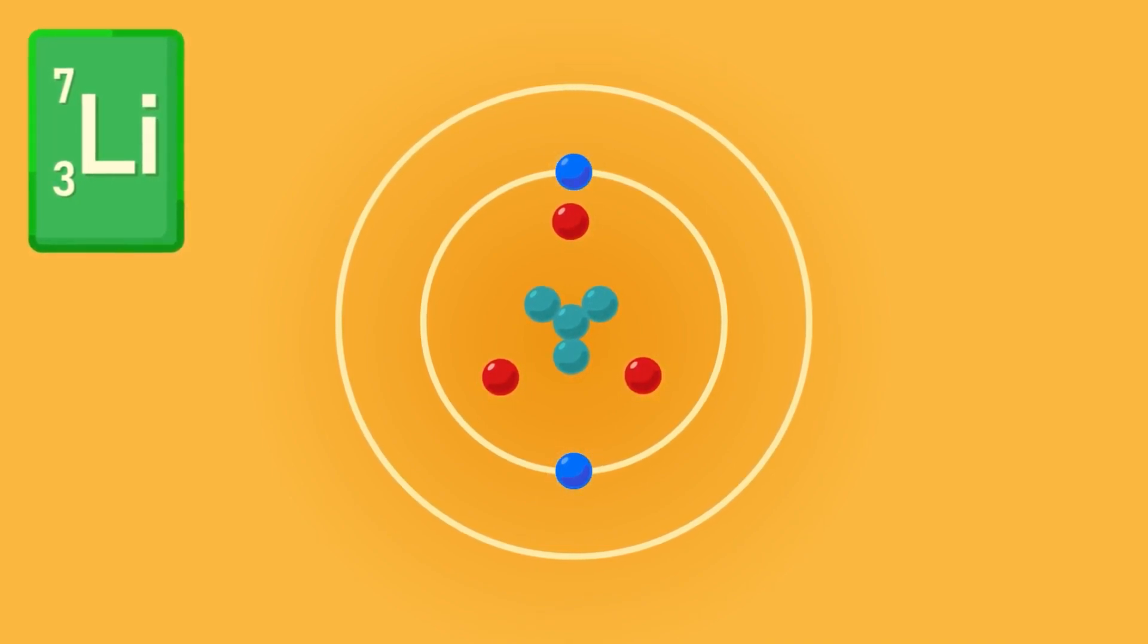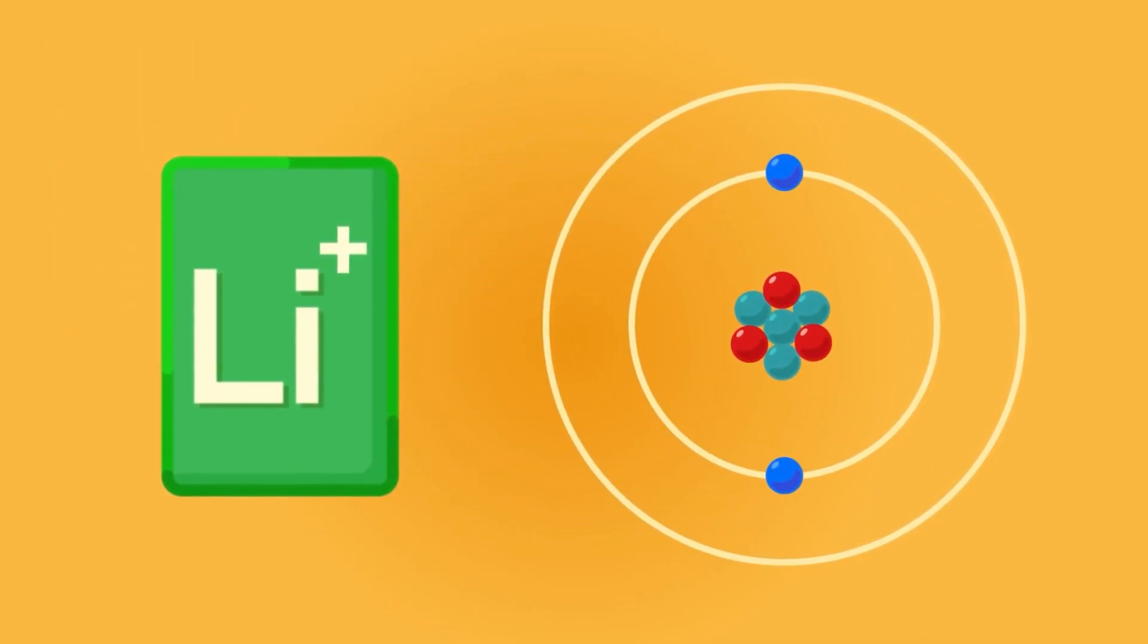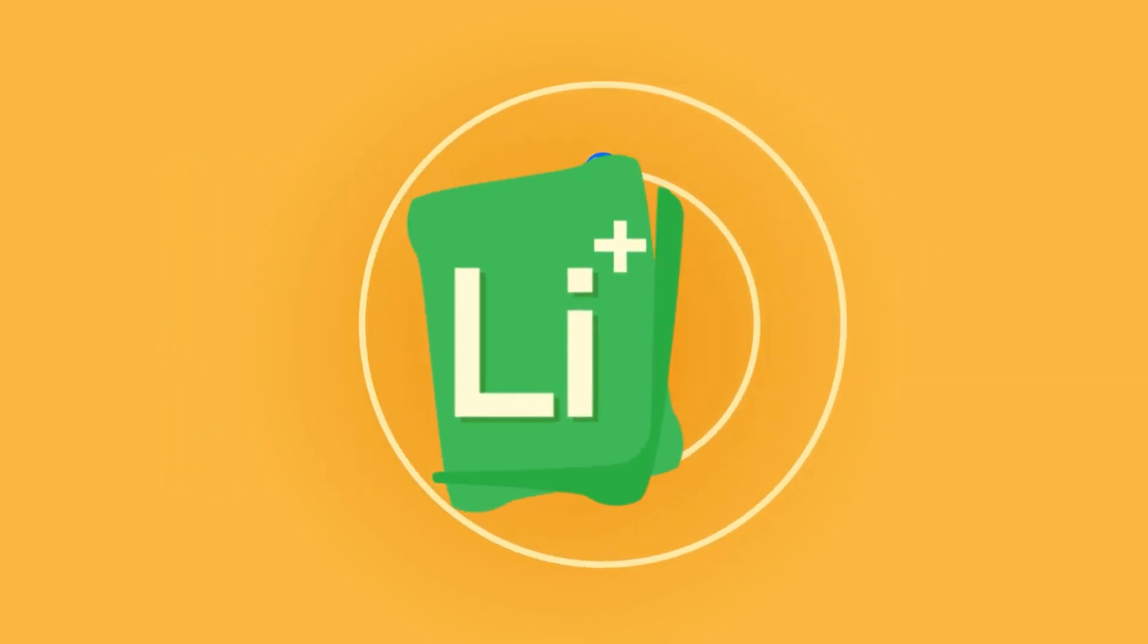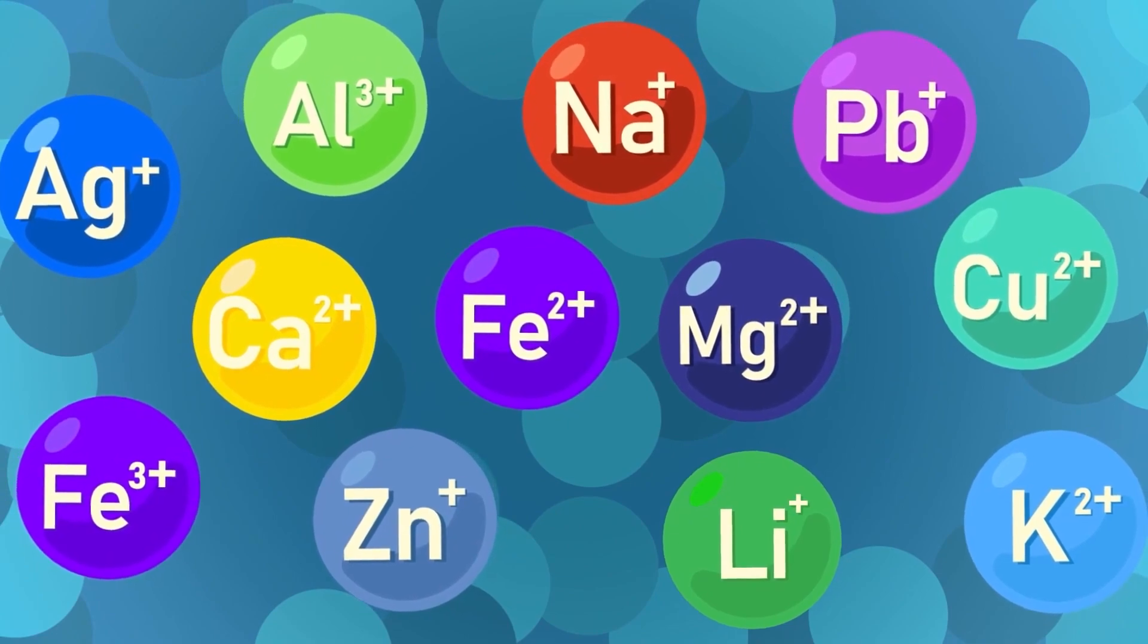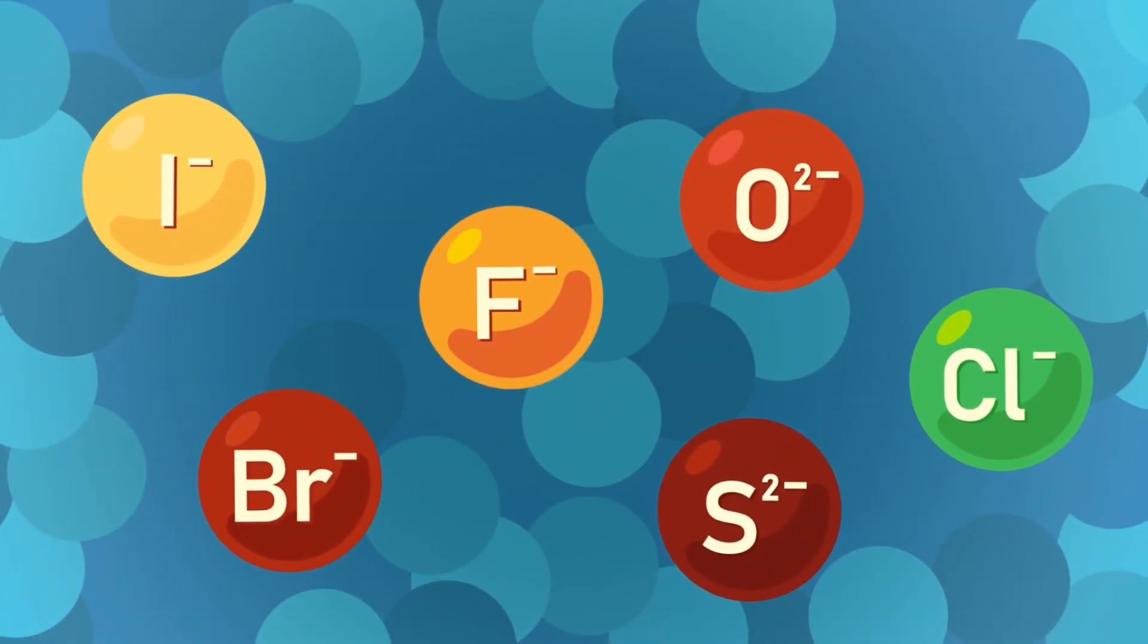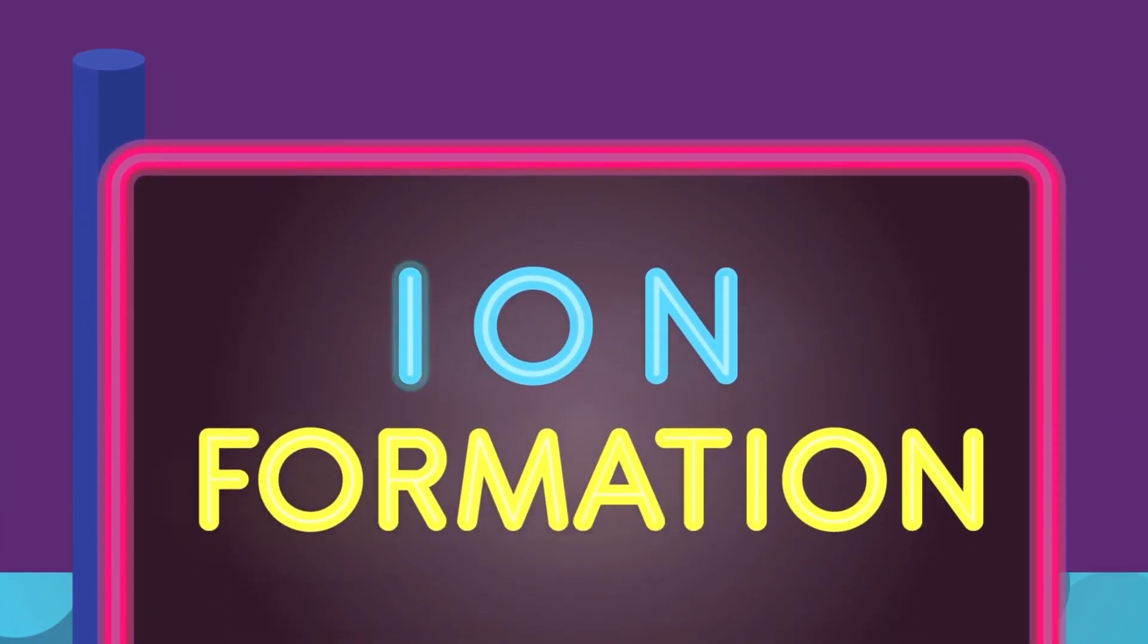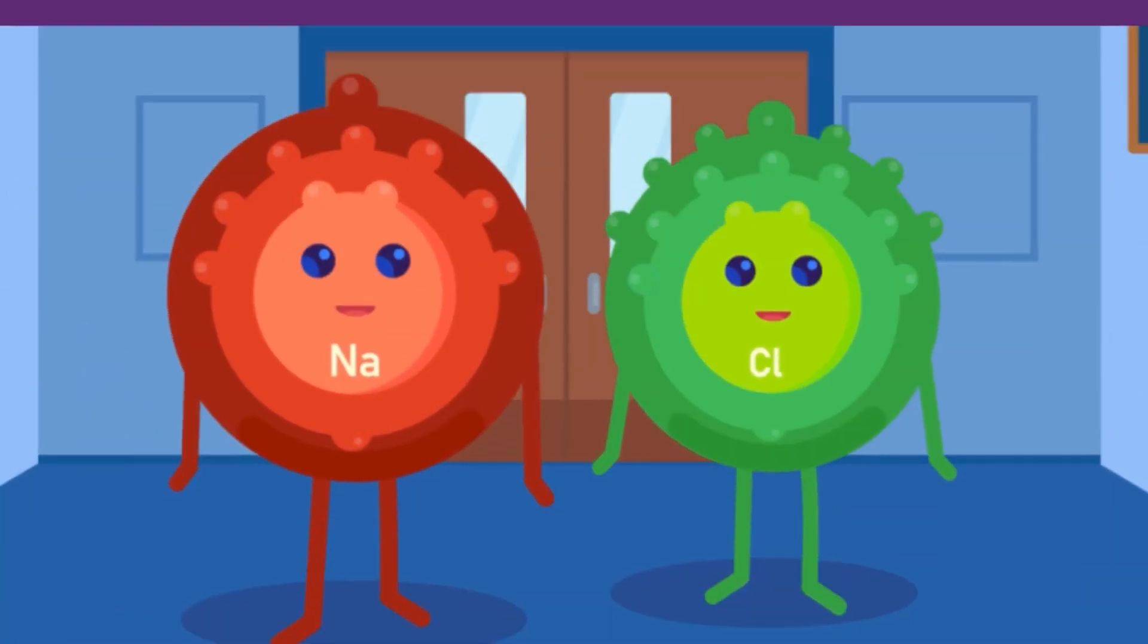Thus an ion can carry either positive or negative charges. The positive ions or cations are mostly formed by metals. The negative ones or anions are mostly formed by non-metals.